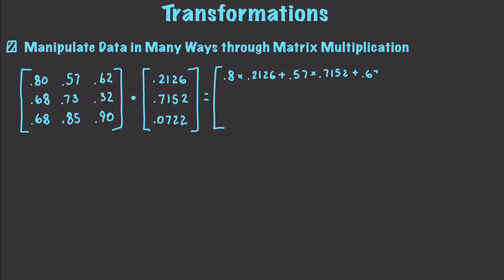0.8 times 0.2126 plus 0.57... And this is just the beginnings of the awesomeness that we can perform with transformations. Simple example. Okay, so this is going to allow us to easily convert colors into their grayscale representation.